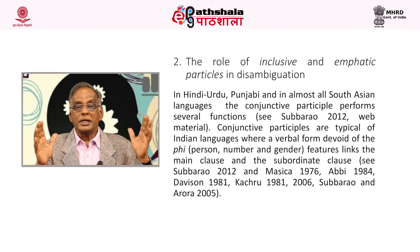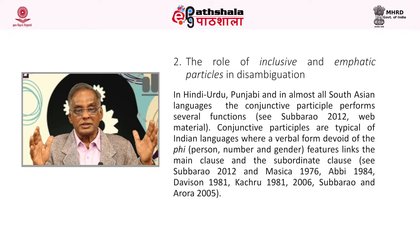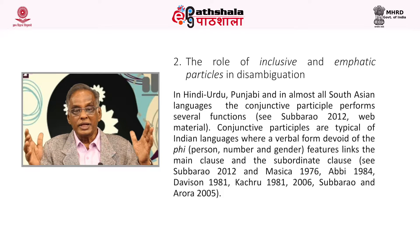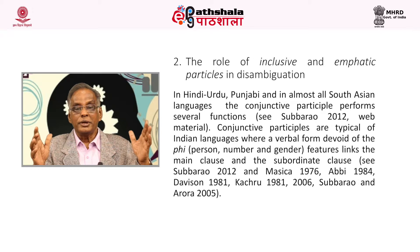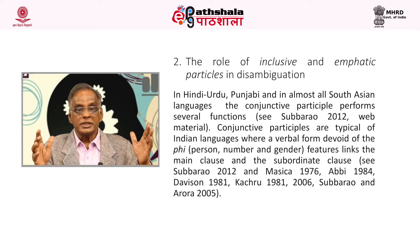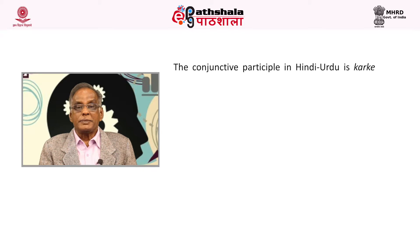Conjunctive particles in Indian languages have the function of linking the main clause and the subordinate clause. In Hindi, for example, jakar meaning 'having gone,' akar meaning 'having come,' etc. These conjunctive participles are devoid of person, number, and gender features. These are called phi features. So conjunctive participles in South Asian languages are devoid of phi features.